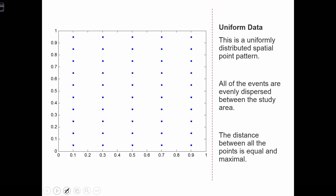This is an example of uniform data. In this case, all the events are evenly dispersed throughout the study area. Sometimes we're going to call a pattern like this uniform, but we often refer to it as being a dispersed spatial pattern as well. The distance between all the points is equal, and they're as spread out as possible.